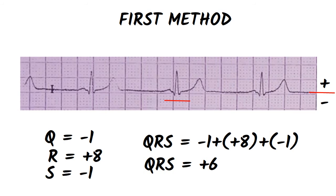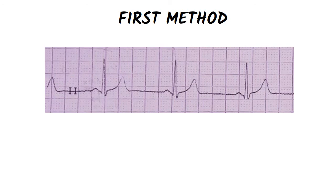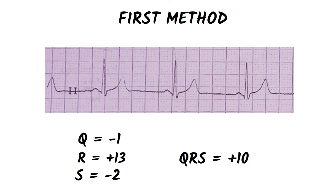We make the exact same thing in lead 2. Q equals minus 1, R equals plus 13, and S equals minus 2, so the QRS complex in lead 2 is plus 10.